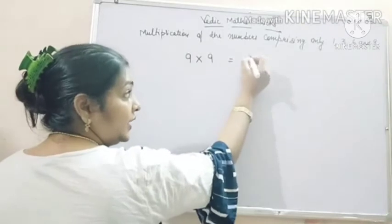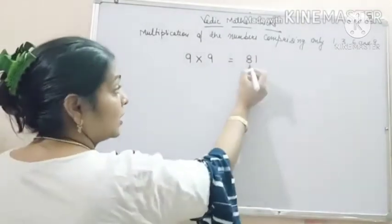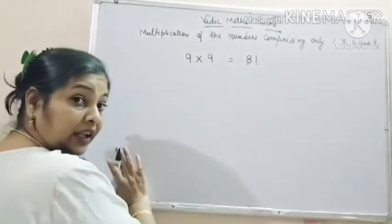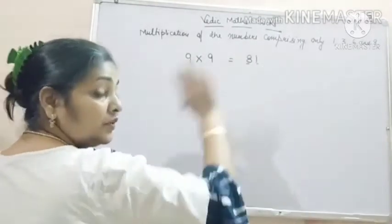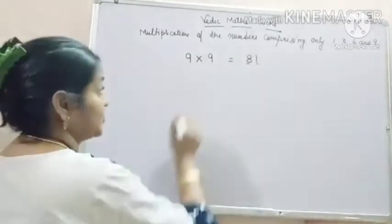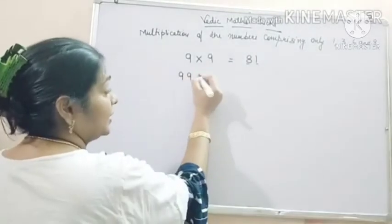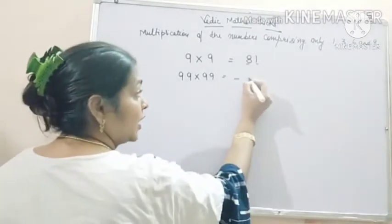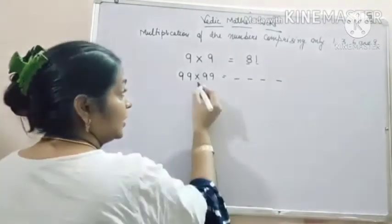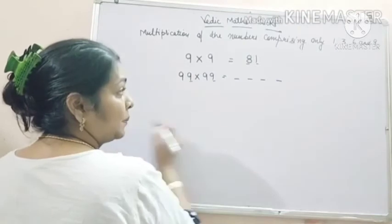9×9 is 81. So our numbers are 81, 8 and 1, on which we have to apply the operation. So 99 into 99. Our answer should be 4 digit number: 1, 2, 3, 4. You have to multiply this.